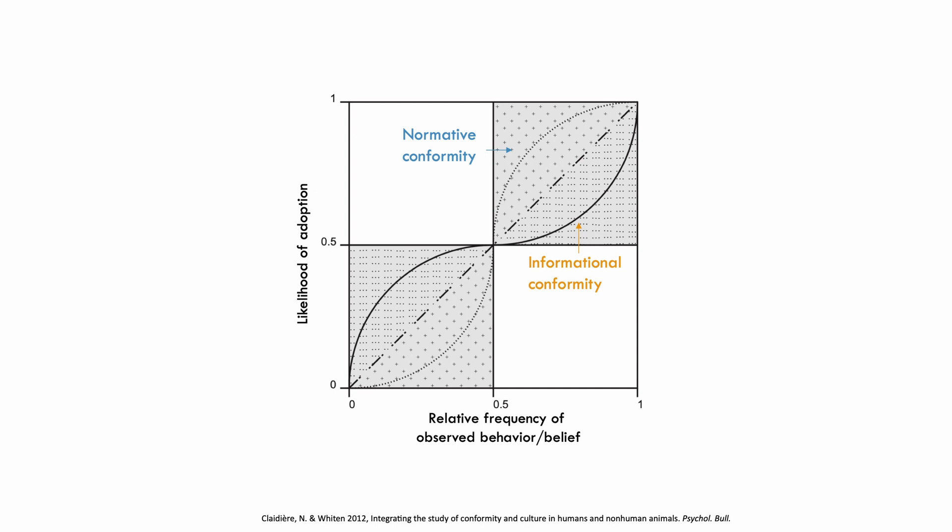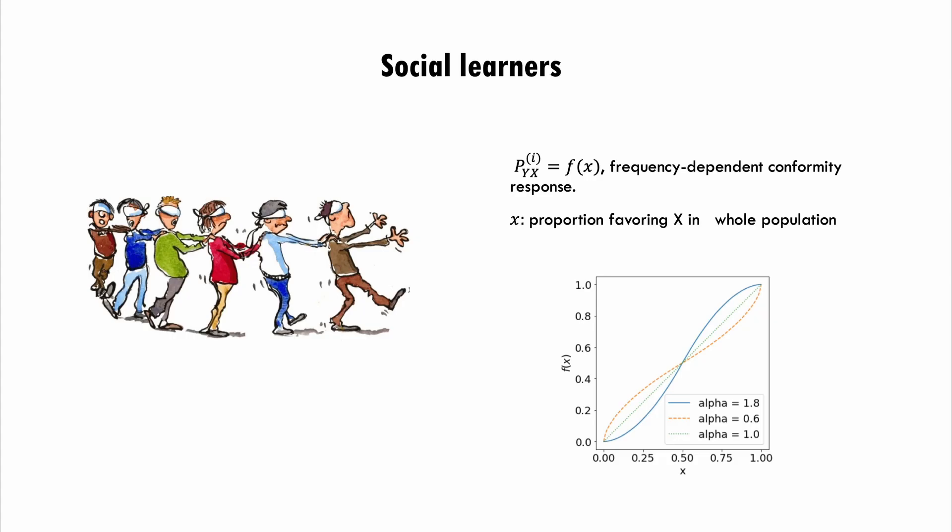One is called normative conformity and the other informational conformity. Normative conformity has to do with fitting into a group — for example, one decides what to wear to fit in with their classmates. Informational conformity has to do with wanting to discover the best option, such as wanting to find the best song to listen to on the internet. These two types of conformity are associated with different shapes of the conformity response: one with an S-shape and the other with an inverse S-shape. We have written down a functional form for f(x) parameterized by one shape parameter, varying which allows us to recover both types of conformity.